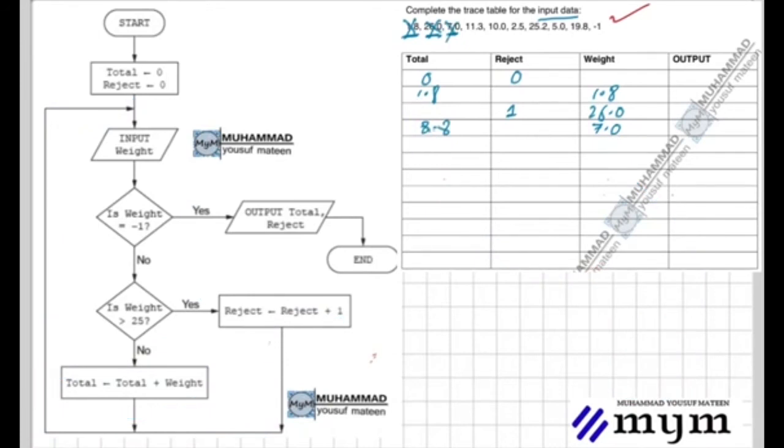Now we input 11.3. It's not minus one, not greater than 25. So we add: 8.8 plus 11.3. Let me calculate: 8 plus 11 is 19, point 8 plus point 3 is point 1, carry the one... we get 20.1. The total weight is 20.1.